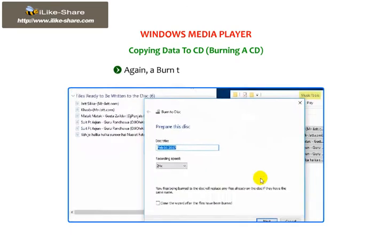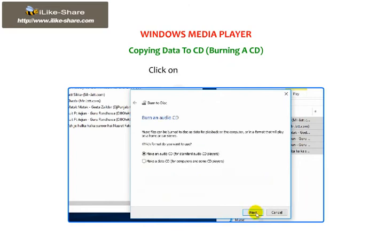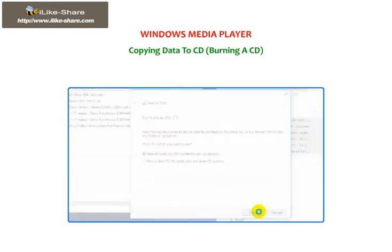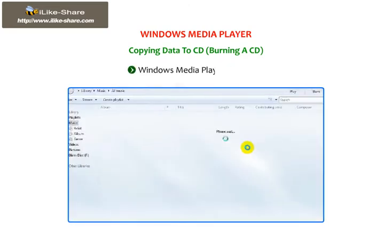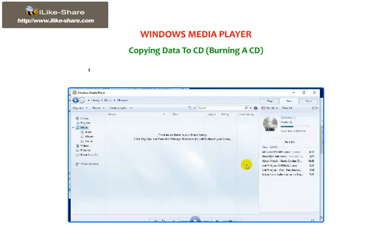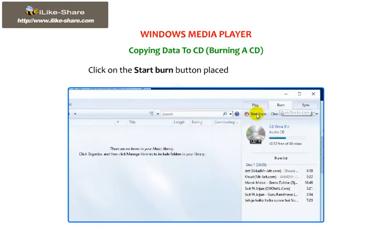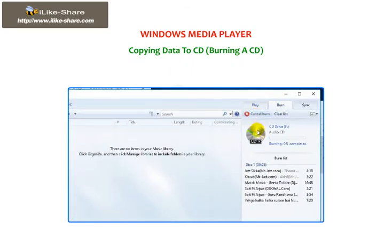A Burn to Disk dialog box appears again. Click on the Next button. Windows Media Player will open. Click on the Start Burn button placed under the Burn tab. The songs will get burned to the disk.